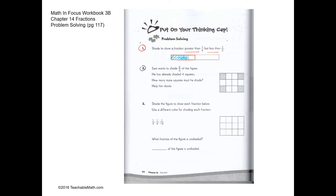Question two: Sam wants to shade two thirds of the figure. If we divide it into three equal parts, each part is one third, and two parts make two thirds. Some squares are already shaded, so we need to shade two more here and two more here.